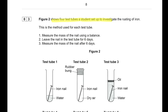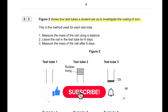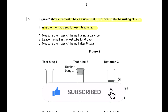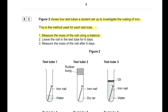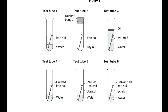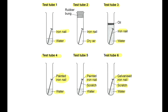Figure 2 shows six test tubes set up to investigate the rusting of iron. The method: measure the mass of the nail, leave it for six days, then measure the mass again. The conditions are: tube 1 — iron nail with water; tube 2 — iron nail with dry air; tube 3 — iron nail with water but no air; tube 4 — painted iron nail; tube 5 — painted iron nail scratched, in water; tube 6 — galvanized iron nail scratched, in water.